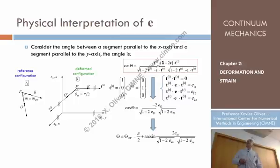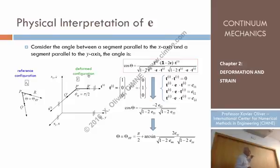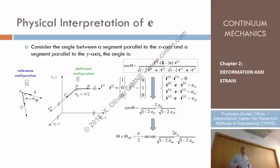The same interpretation applies to the other terms of the strain tensor. If we take two segments at the deformed configuration that are oriented along directions X1 and X2, those segments at the reference configuration form an angle that was no longer pi/2 — it was a different angle. That original angle can be computed through the corresponding formula, which includes a minus sign, and can be written in terms of the final angle pi/2 plus an additional expression.